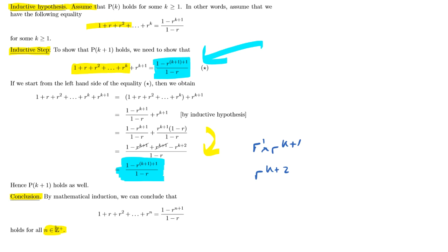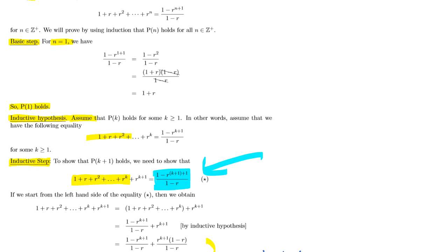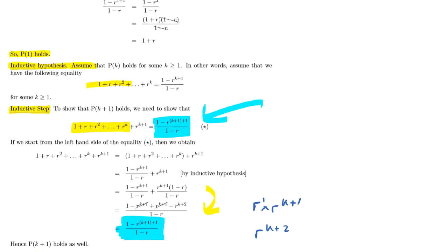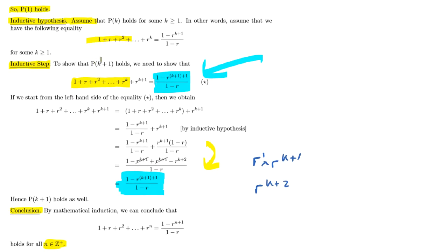Well done if you got to the end of this video — this is a classic mathematical induction question. Your question might look a little different but the steps are the same: state your proposition, do the base step, set up the inductive hypothesis by assuming P(k), then show P(k+1) holds. Up to that point you've mainly used the template, and this is where all the marks are — you need to use algebra to get the left hand side to equal the right hand side. Try three or four of these questions and you should get a good feel for this topic. Good luck.